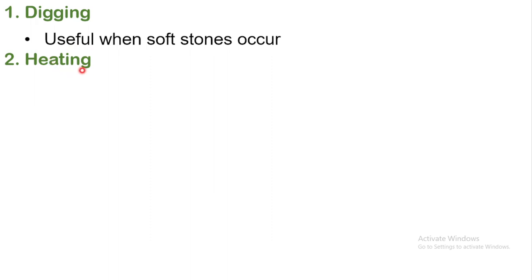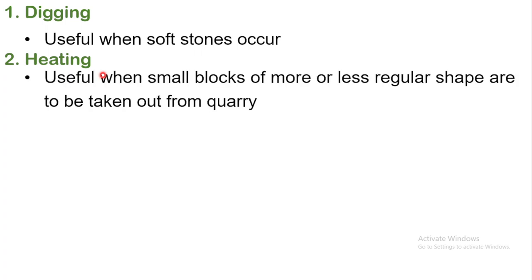The second sub-method is heating. We apply heat to the top surface of the rock. So the end of the ground is treated with grinding, and it will form a crack.